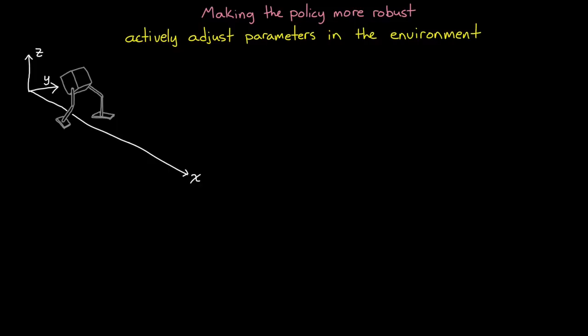We'll start with making the policy more robust. Even though we can't quantify robustness, we can make the system more robust by actively adjusting parameters in the environment while the agent is learning. For example, with our walking robot, let's say manufacturing tolerances cause the maximum joint motor torque to fall between 2 and 2.1 newton meters. We're going to be building dozens of these robots and we'd like to learn a single policy for all robots that is robust to these variations.